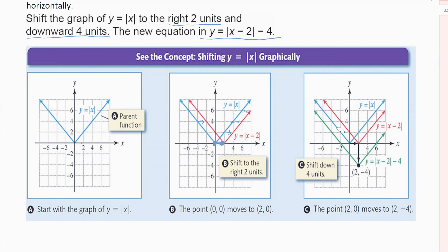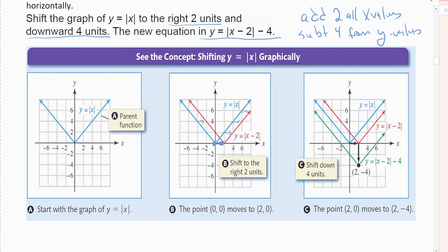So: right two, down four. I added two to all my x values and subtracted four from all of my y values. That's what the shift does — when I go to the right, it adds to the x values, and when I go down, I subtract from the y values.